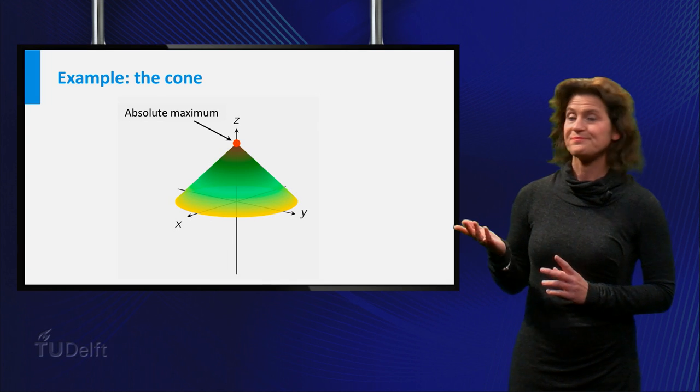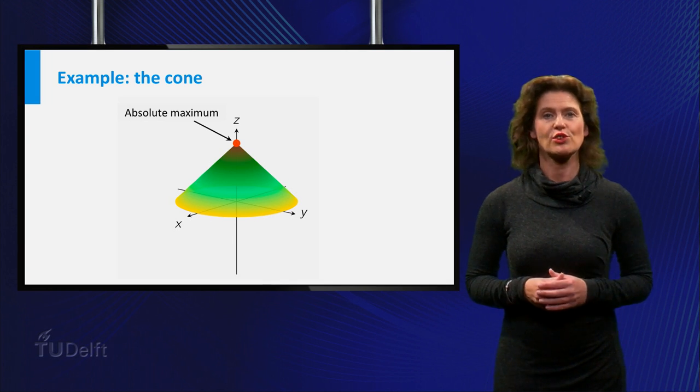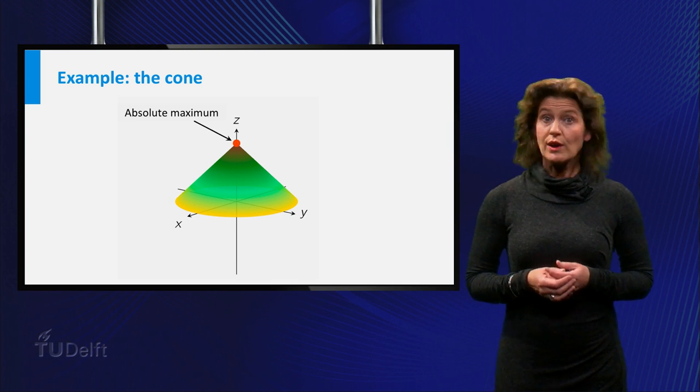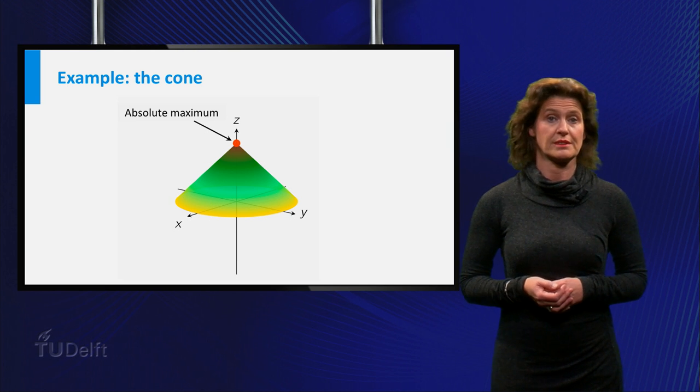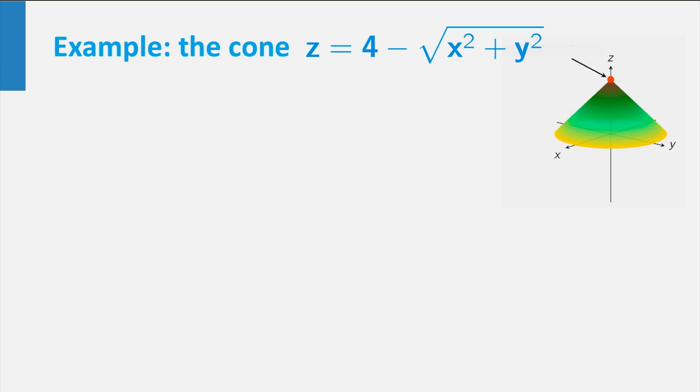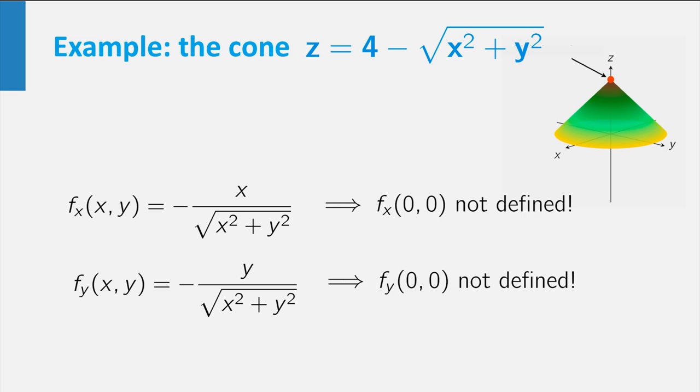Look at this graph. You see there is a sharp point in the top of the cone. This is clearly an absolute maximum. However, the function is not differentiable in that point. The formula of the function is z is equal to 4 minus the square root of x squared plus y squared. From this it is not hard to compute the partial derivatives. You can do that yourself. But they do not exist at the origin. So this is a point that is a maximum, but where the partial derivatives do not exist.